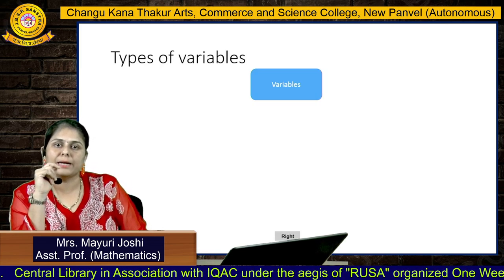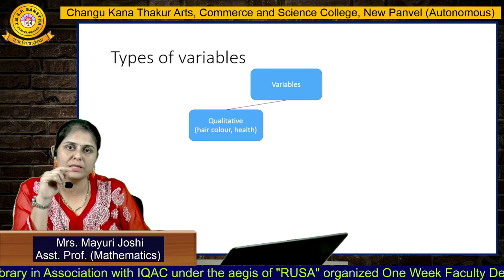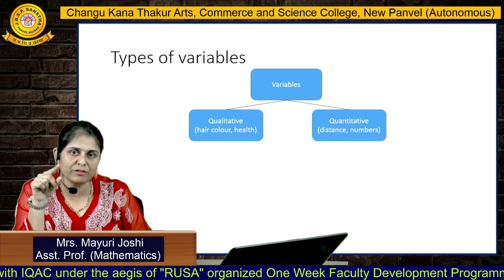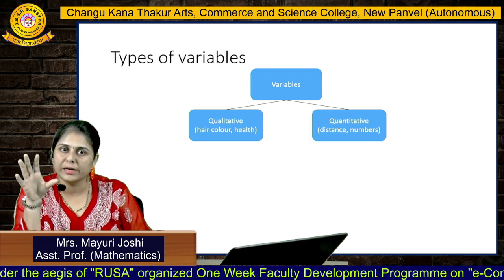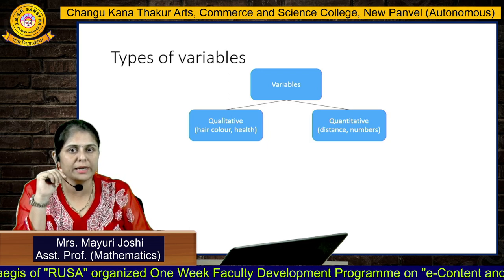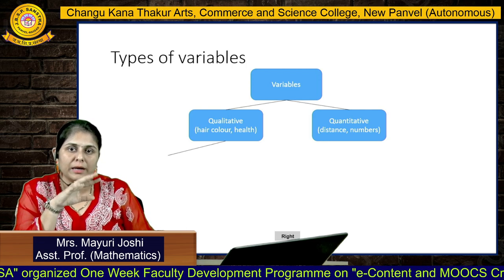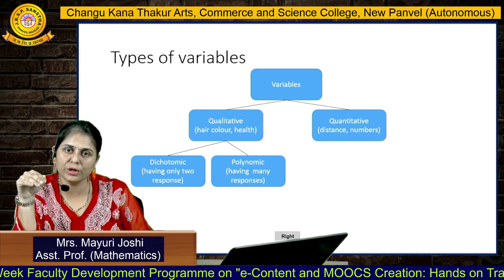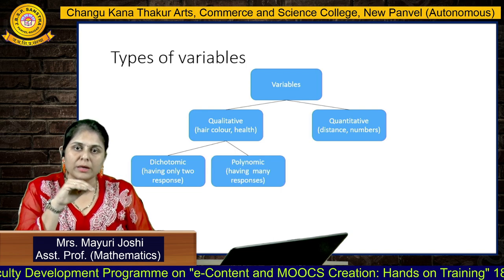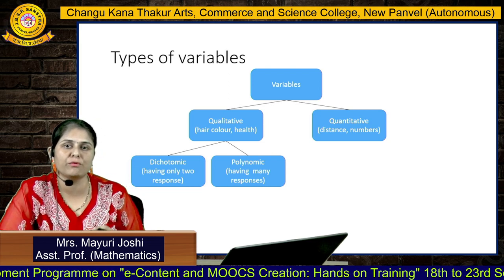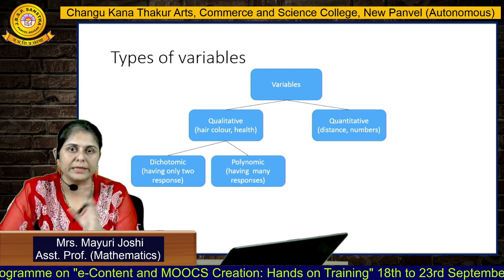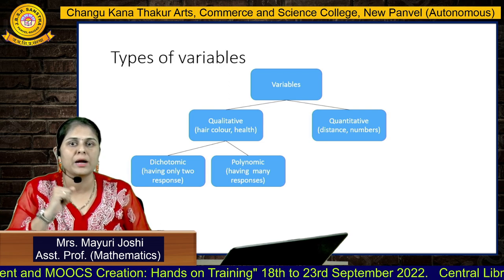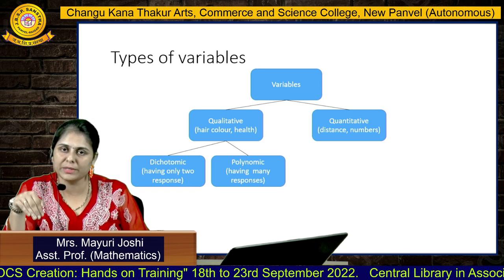There are types of variables. Variables are divided into two parts: qualitative and quantitative. Qualitative variables include hair color, health, etc. Quantitative variables include distance, numbers, and so on. Qualitative data is also defined in terms of dichotomic or polychotomic. Dichotomic means data with only two responses — yes or no, genders (male and female), or true or false. These all come under dichotomic. Polychotomic means having more than two responses.